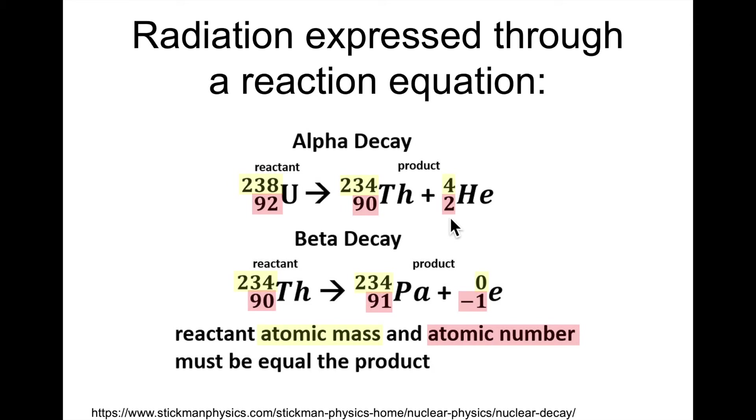How did it go from 238 to 234 and 92 to 90? Well, that's because an alpha particle was produced or was expelled. An alpha particle has an atomic number of 2 and a mass of 4. If you look at the math: 4 plus 234 gives me 238, 2 plus 90 gives me 92. It makes sense.